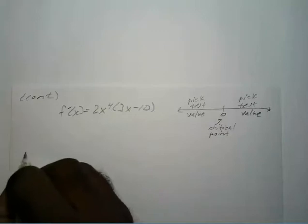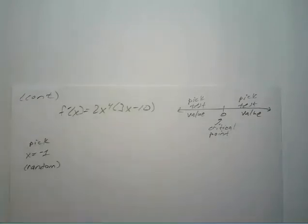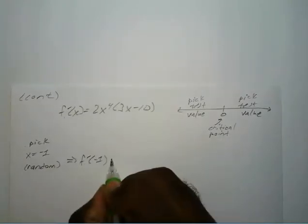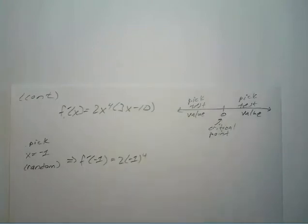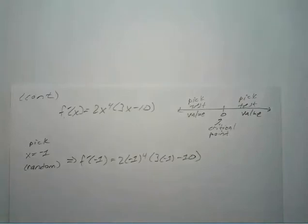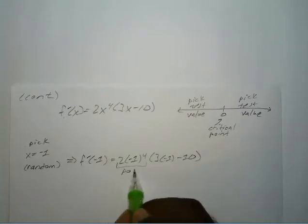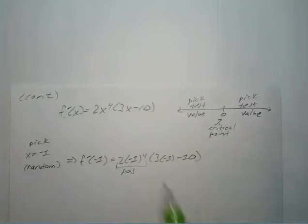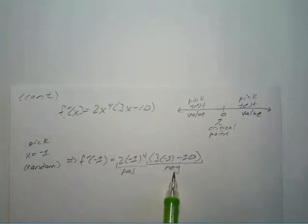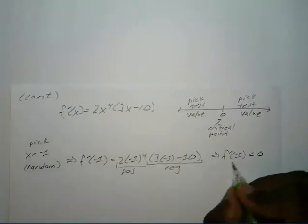On the left, I'll pick x equals negative 1 — completely random. The first derivative at negative 1 equals 2 times negative 1 to the 4th power times 3 times negative 1 minus 10. Negative 1 to the 4th is positive, so this factor is positive. But 3 times negative 1 minus 10 gives negative 3 minus 10, which is negative. Positive times negative is negative, so the first derivative at negative 1 is less than zero.